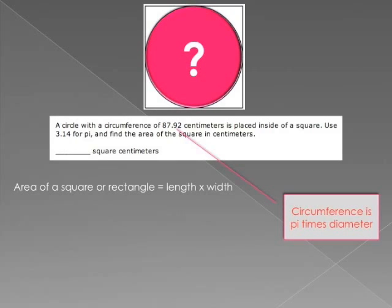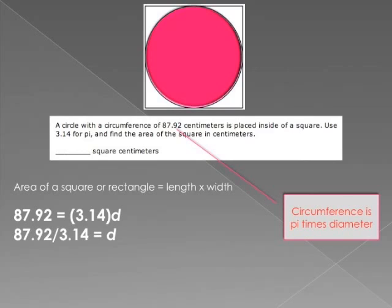You already figured it out. The circumference of the circle is given, and circumference equals pi times diameter. That means the diameter would be the circumference divided by pi. The diameter has something to do with the area of the square. So, circumference equals pi times diameter, which means diameter equals circumference divided by pi.